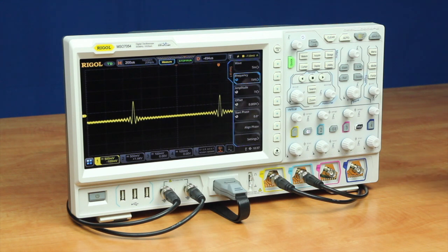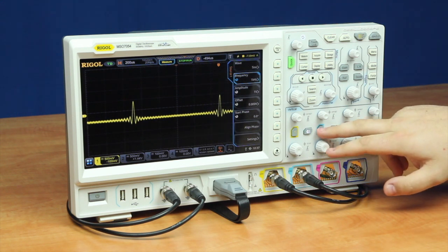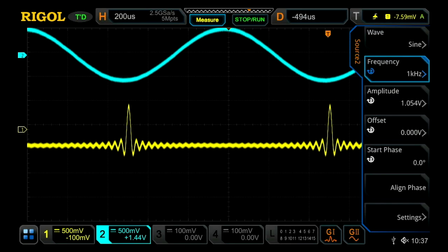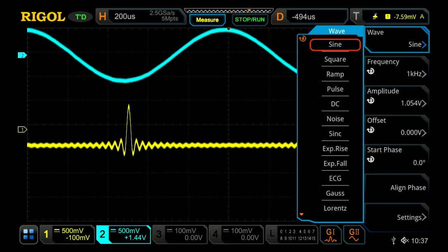One of the advantages of having the built-in waveform generator is if I turn on channel two and then our second waveform generator, we've got our standard waveforms: sine wave, square wave, ramp, pulse, DC, and noise.